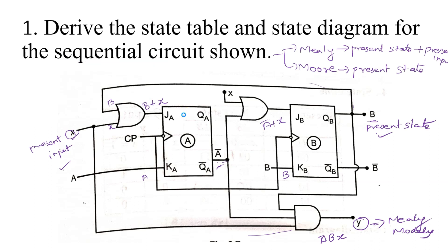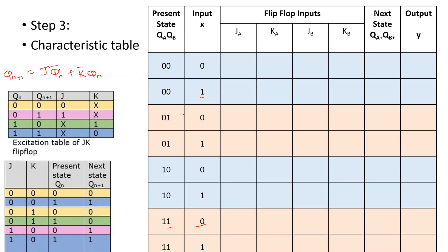Next, we need to find the state table. In order to find the state table, we need to find the next state. We can find the next state either by solving through the characteristic equation or through the excitation table. We will first fill in the data of J_A, K_A, J_B, and K_B. We know that J_A = B + X.